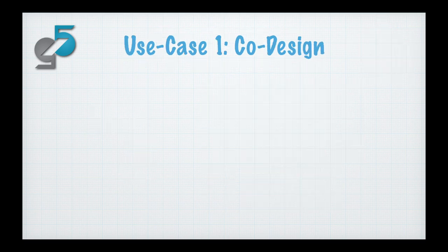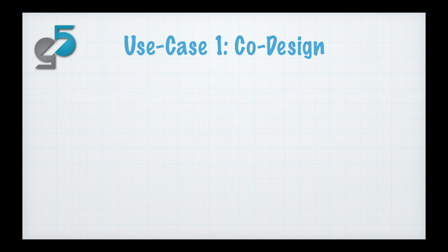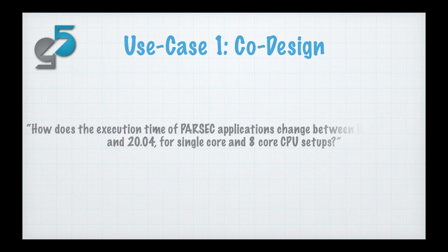We're going to go over two use cases here. In our paper we highlight three in much greater detail. We're going to highlight two here as they show quite clearly how GEM5 Art and GEM5 Resources are useful for specific tasks. The first example is co-design. What we mean by co-design is observing the interaction of software and hardware and how hardware and software can change and impact performance.